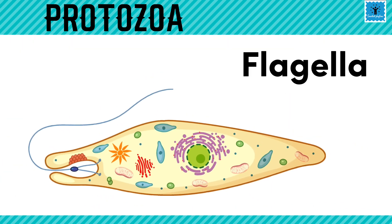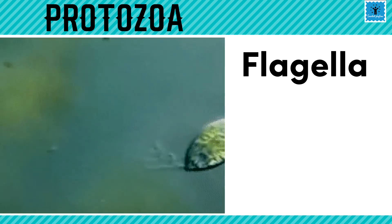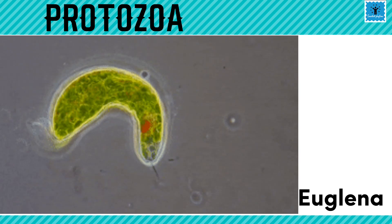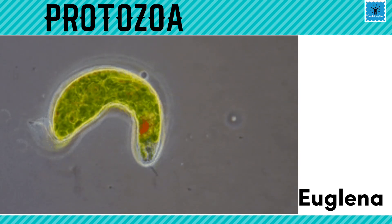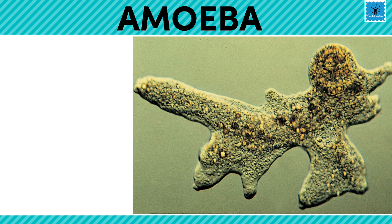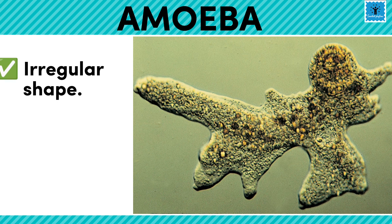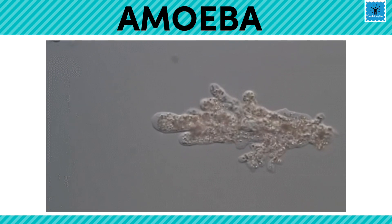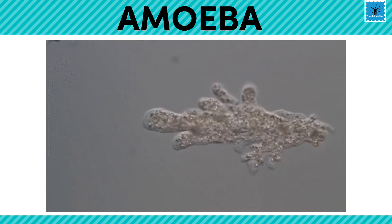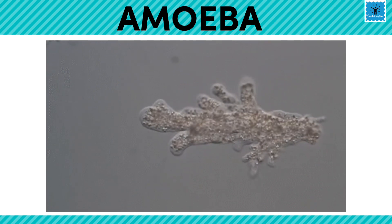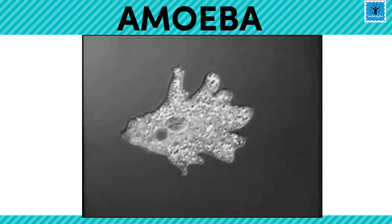The second locomotion structure is the flagellum — a long thread-like structure that extends from the cell surface. The flagellum moves in a whip-like motion that produces waves which propel the microbe around, for example in Euglena. Amoeba moves with a unique method: since it has an irregular shape, whenever it senses food around itself it extends its body outward in a finger-like projection called pseudopodia or false feet, then pushes its body forward in a crawling-like movement.